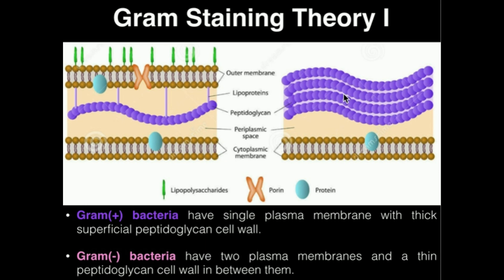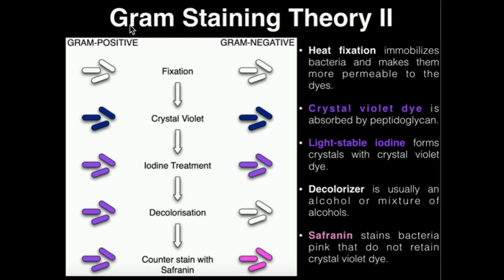So the general basis of gram staining is that the crystal violet dye is retained by the thick peptidoglycan layer of gram-positive bacteria, but it's going to be lost by the thin peptidoglycan layer of gram-negative bacteria. Let's talk about how this actually works — this is a flowchart, and we'll see the steps of how you actually do a gram stain.